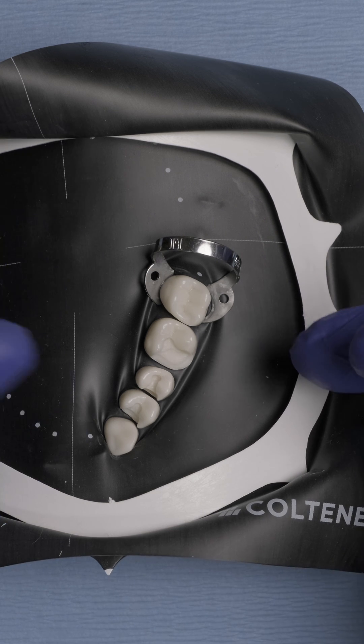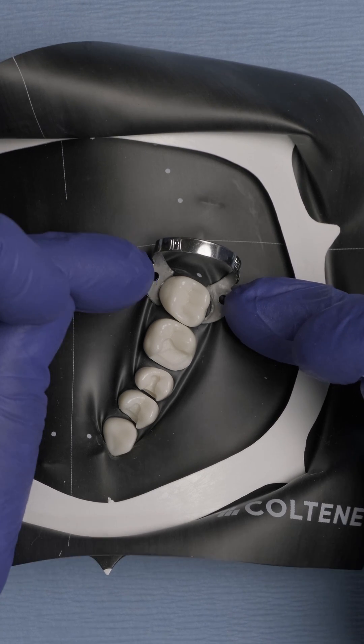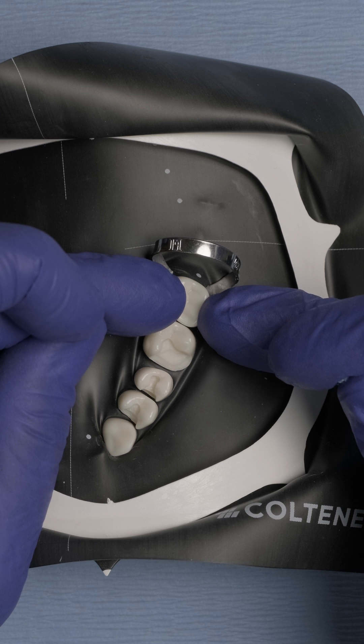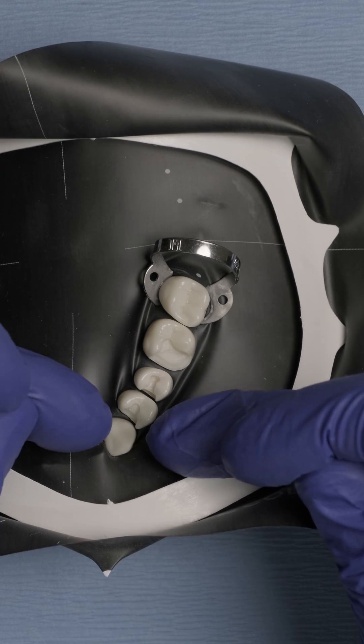As you can see, we have now isolated the area. We have our W3 clamp as a retentive clamp on the second molar. We have isolated the first molar, the second premolar, the first premolar, and the canine.